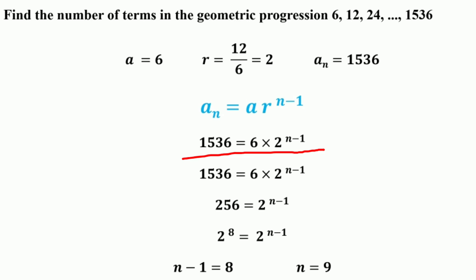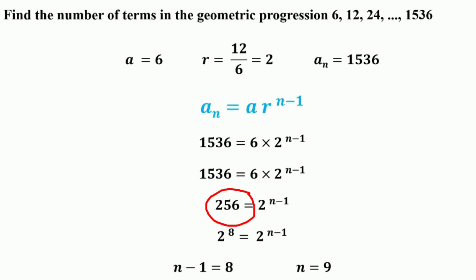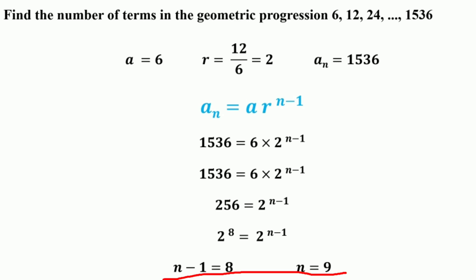Substituting the values: 15,136 equals 6 times 2^(n-1). Dividing both sides by 6 gives 256 equals 2^(n-1). We rewrite 256 in exponential form with base 2: 256 equals 2⁸. So 2⁸ equals 2^(n-1). Equating the indices since they have the same base, 8 equals n minus 1, so n equals 8 plus 1, which equals 9. Hence 15,136 is the 9th term of the given geometric progression.